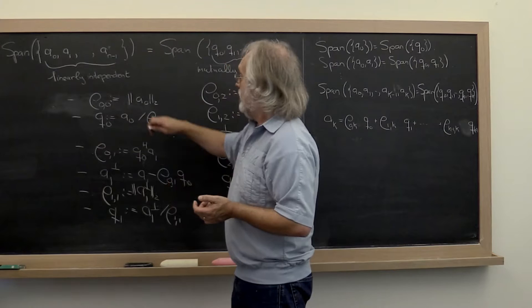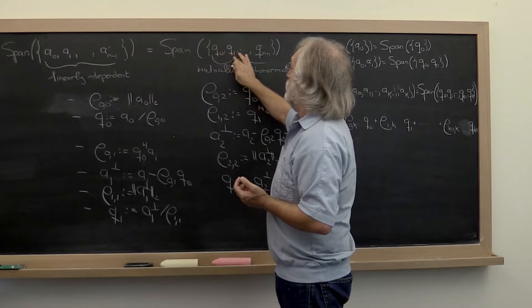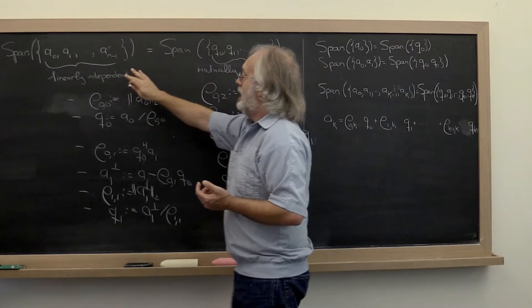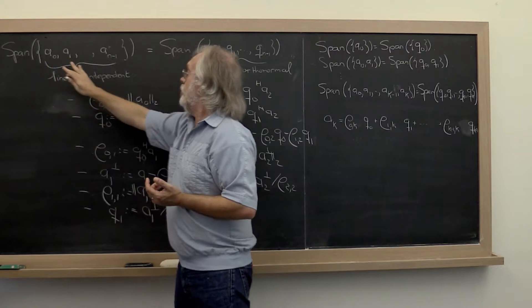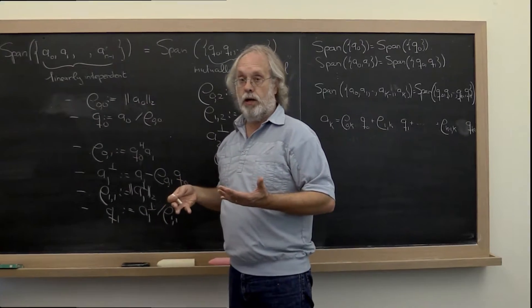The span of A0 and A1 is the same as Q0 and Q1. Why? Because you computed Q1 by taking A1, subtracting out the component in the direction of Q0, and then making it of length 1.